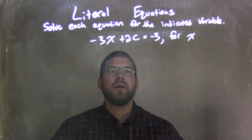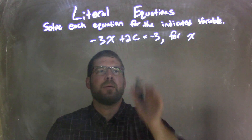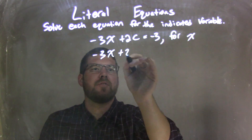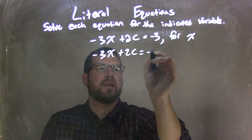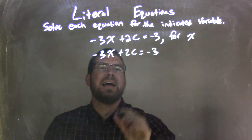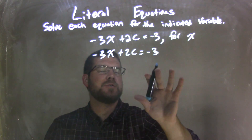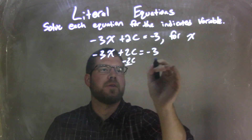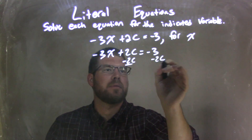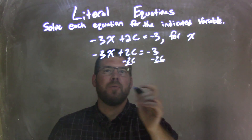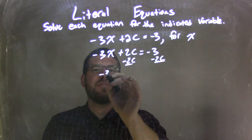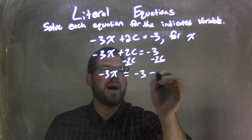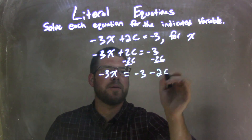What I want to do here is rewrite my equation: negative 3x plus 2c equals negative 3. Then I'm going to bring my 2c over, so I'm going to subtract 2c from both sides. That leaves me with negative 3x equals negative 3 minus 2c.